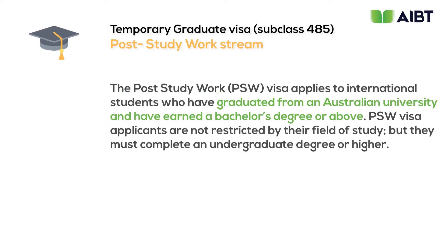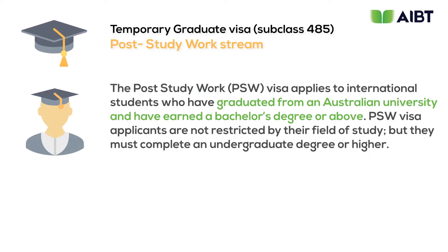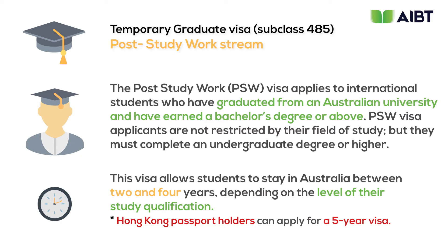The second visa, the Post-Study Work Stream visa, or PSW, applies to international students who graduated from an Australian university and have entered or completed a bachelor's degree, master's, or higher. This specific visa allows students to choose their major of study, and students are eligible to stay in Australia between two to four years after they've completed their qualification.